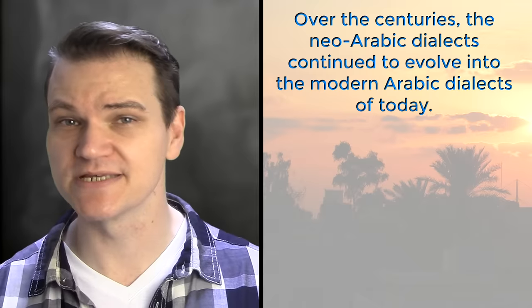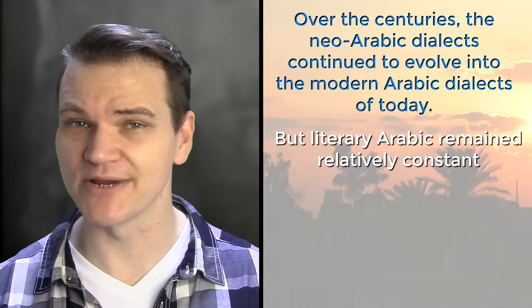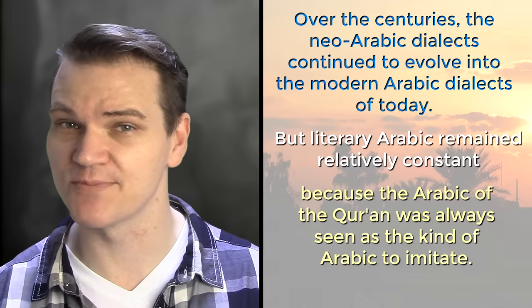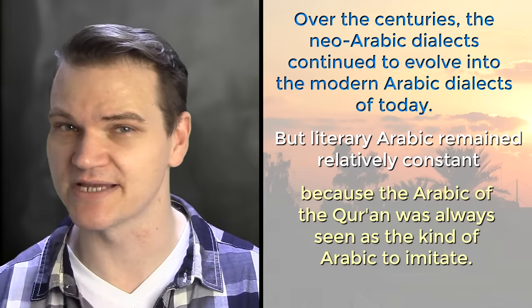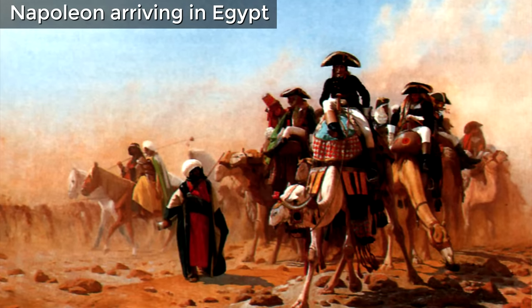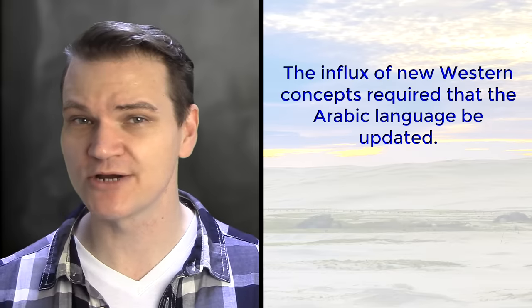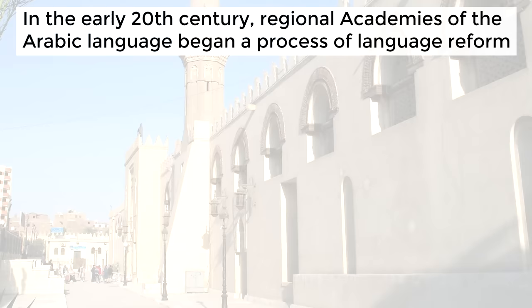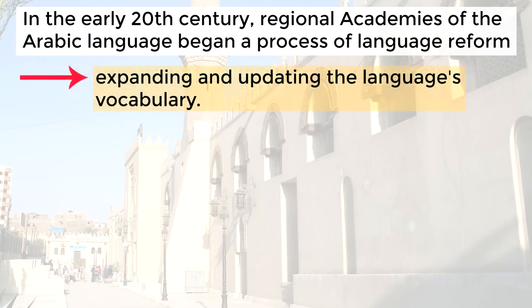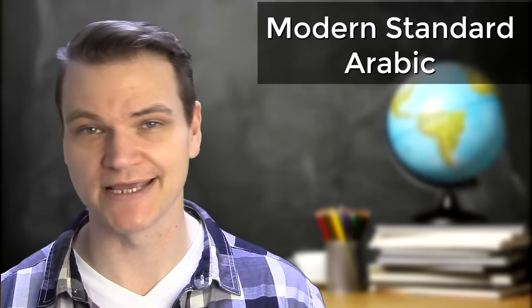Over the centuries, Neo-Arabic dialects continued to evolve into the modern colloquial dialects of today. But Literary Arabic remained relatively constant, because the Arabic of the Quran was always seen as the ideal Arabic to imitate — probably having a conservative effect on the dialects, limiting how much they changed. After Napoleon entered Egypt in 1798, the Arab world entered a period of greater contact with the West. The influx of new Western concepts required the Arabic language to be updated. In the early 20th century, regional language academies began reforming Arabic, mainly expanding vocabulary, culminating in Modern Standard Arabic.